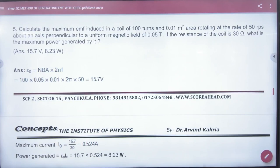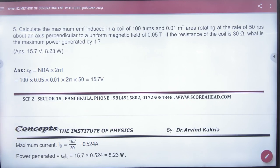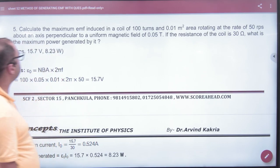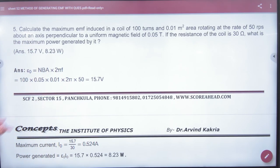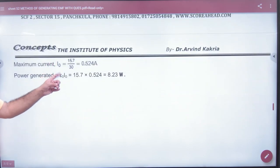Fifth question: Calculate maximum EMF induced in a coil of 100 turns and area given, rotating at 50 RPS. 50 RPS, frequency here, omega about an axis perpendicular to uniform magnetic field B given. Resistance given. What is the maximum power generated? First e₀ = NBA omega, then current = e₀/R, then power = voltage into current, e₀ into i₀. Answer.